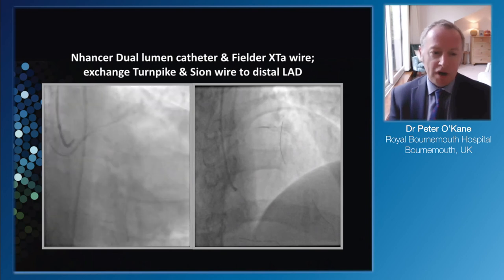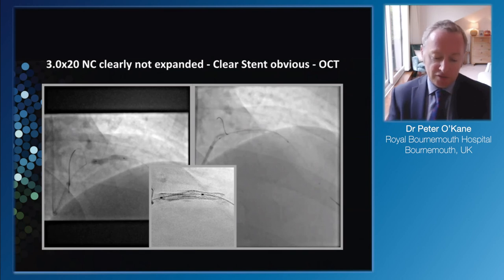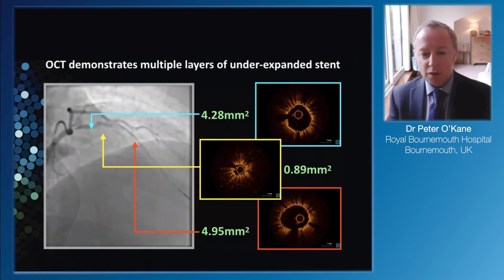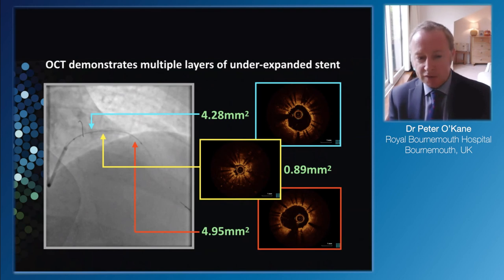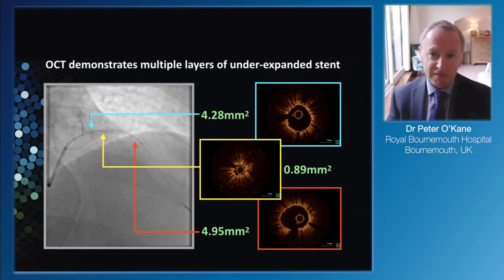I used a dual lumen catheter to make sure we got down through the stents quite safely. When you balloon up, you can see on the ClearStent technology a very obvious, very under-expanded stent. Having opened things up, I thought the best technique to understand what's going on would be OCT. On the OCT images: distally there's a lumen of about 4.95mm² in the red box, proximally about 4.28mm² in the blue box. But at the lesion point the lumen area is 0.89mm², with the catheter almost being gripped by the stent. There is definitely more than one layer of stent - possibly two, three, maybe even four layers of stent in this one particular spot. So a very extreme case.